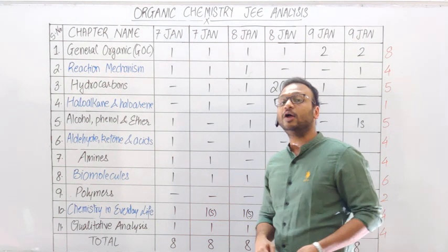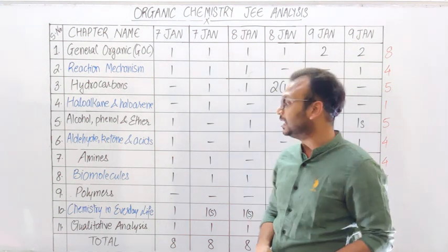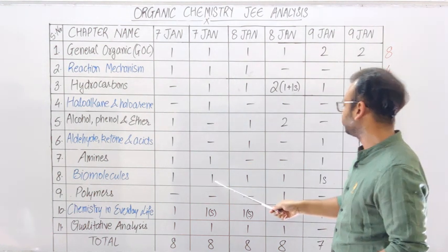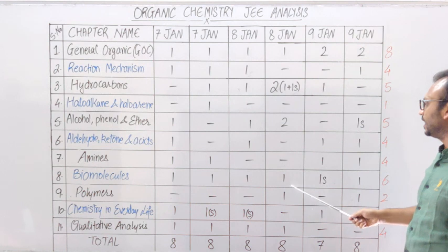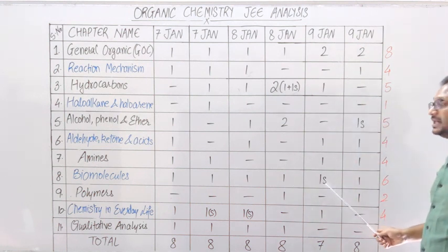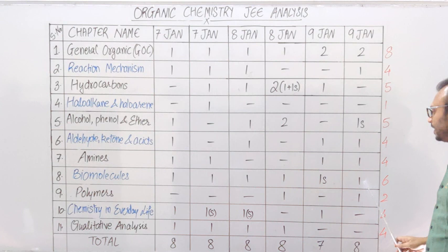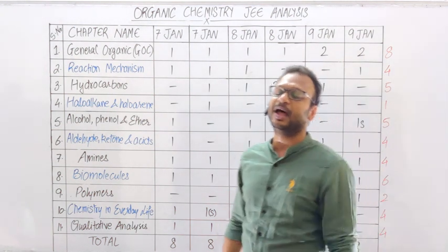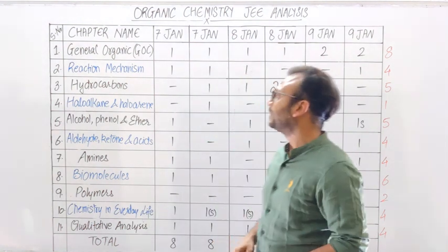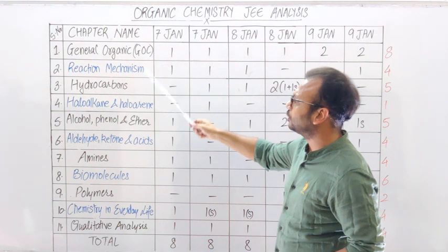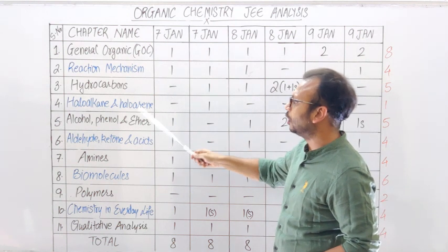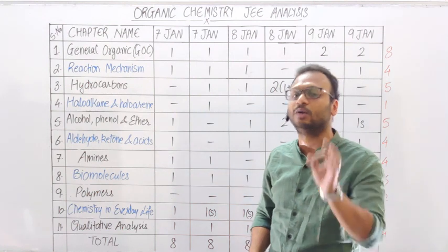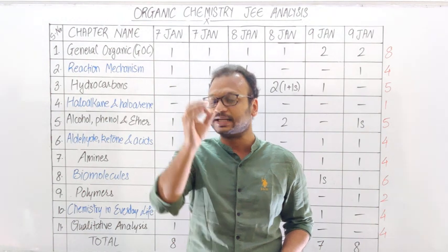फिर आता है Biomolecules। Biomolecules बहुत easy topic होता है, लेकिन उसकी weightage देखिए — 7th January Morning और Evening Shift दोनों में एक-एक question, 8th January Morning और Evening Shift दोनों में एक-एक question, 9th January Morning Shift में numerical type का question। Haloalkanes, Alcohol, Phenol, Ether, Aldehyde, Ketones, Amines — इन सब से ज़्यादा important है Biomolecules। आपके paper में 1 question आना ही आना है।